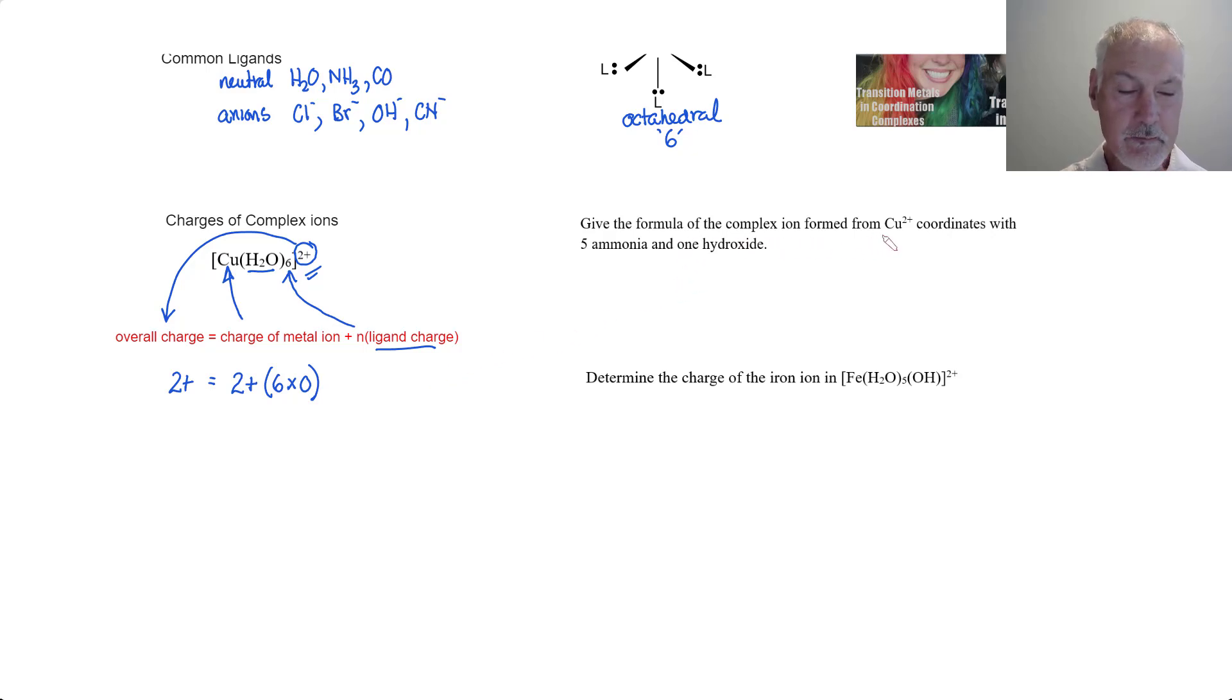Determine the formula of the complex ion formed from the copper two plus ion when it coordinates with five ammonia and one hydroxide. That would involve copper, we have five ammonias and a hydroxide. I'll put square brackets around it. Now we need the charge. The charge on our transition metal is two plus, five ammonia at zero each, and I've got one hydroxide at minus one. So putting that together, we end up with one plus. So that would be my charge on my complex ion.